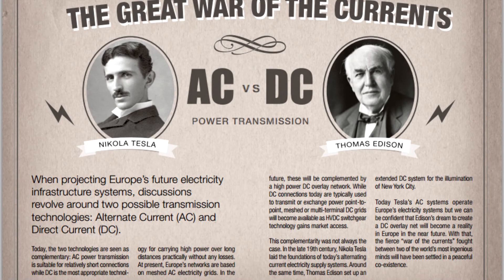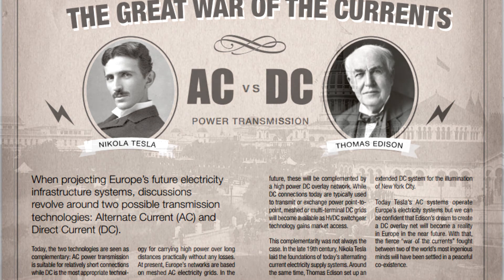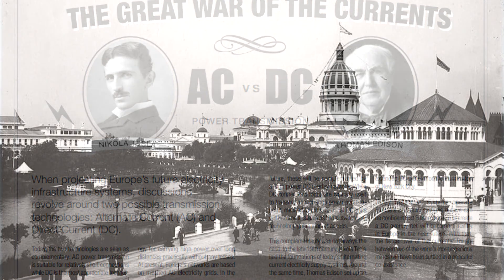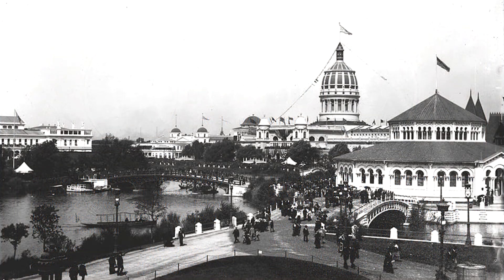Edison, however, didn't want to lose the royalties he was earning from his direct current patents. He began campaigns aimed at spreading misinformation that AC was more dangerous. He also started publicly electrocuting stray animals using alternating current to prove his point.